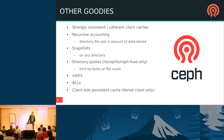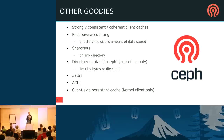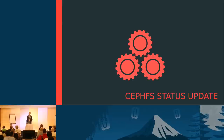CephFS has strongly consistent and coherent client caches — something NFS has never had — meaning it behaves the same way as a local file system. It has a recursive accounting feature that hierarchically tracks everything stored in the system, so looking at a directory's size gives you the total bytes in the entire subtree, like a free du command. You can take snapshots on any directory, use directory quotas limiting subtree size by bytes or file count, and it supports xattrs, ACLs, and client-side persistent caching via fscache.